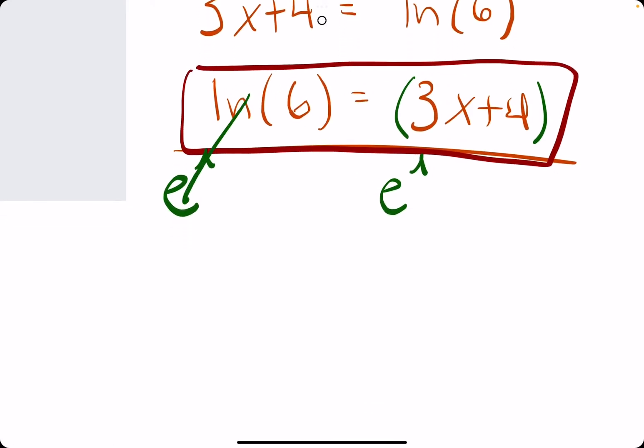e and ln will cancel, leaving us with just 6 on the left. And on the right side, we'll have e raised to the 3x plus 4.